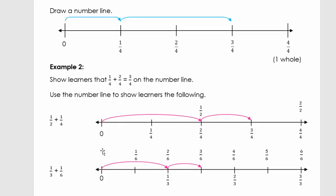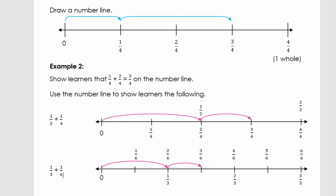Now let's look at one third and one sixth. Three and six are still multiples of each other, and learners did these in previous grades. I first divide the number line into sixths — six sixths is one, three thirds is one. Using the chocolate example: I ate one third of the chocolate and then one sixth. The answer is three sixths. You can also simplify: three sixths equals one half, which you can see on the number line, or divide top and bottom by three to get one half.